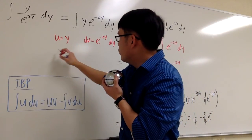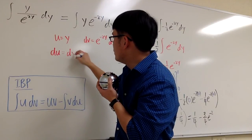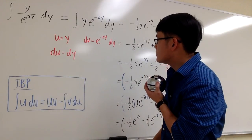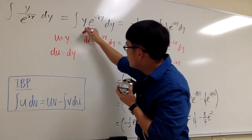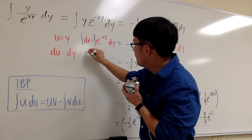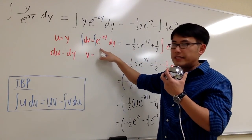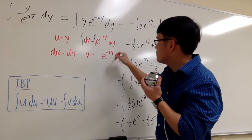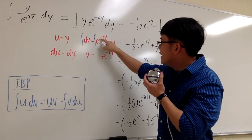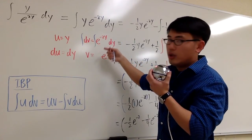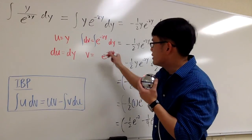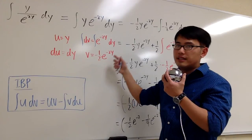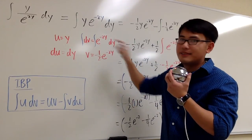So for the u, we are going to differentiate that. So we get du is equal to dy. The derivative of y is just 1, but we attach dy to it. For the dv, we are going to integrate it right here. So we get v is equal to, the derivative of an exponential e to the negative 2y, it stays the same for now, e to the negative 2y. But then the derivative of negative 2y is negative 2. We will have to divide it by negative 2, which is the same as multiply by negative 1 half. You can put this down real quick and then differentiate this real quick. And you will get that back.